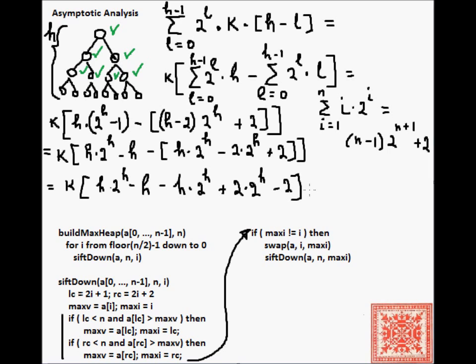Now, what is h? In a complete binary tree, the height is equal to log 2 of n. Technically, it's the floor of log 2 of n. But, for the sake of simplicity, let's stay with reals log 2 of n.